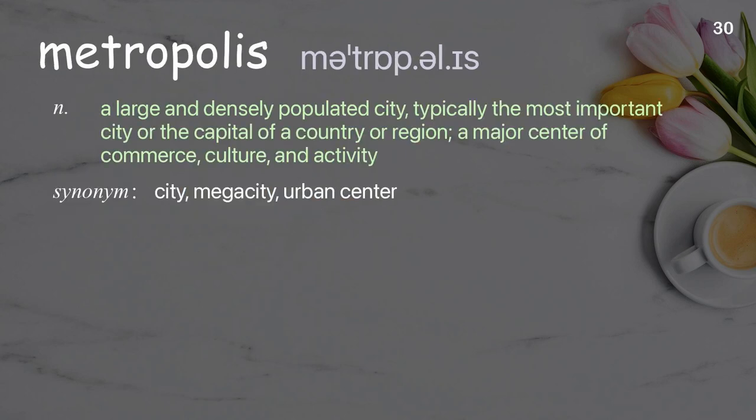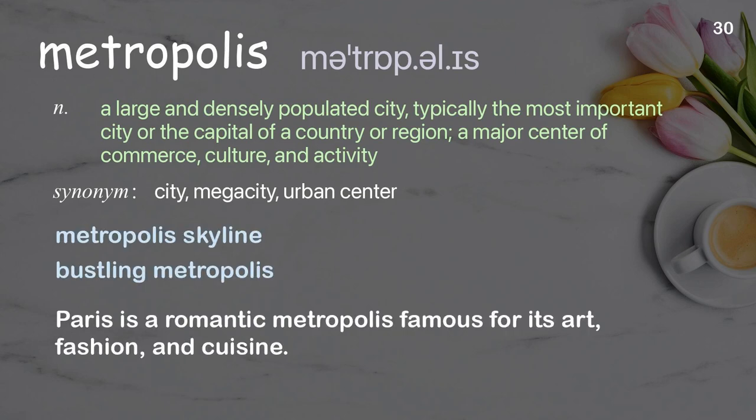Metropolis. A large and densely populated city, typically the most important city or the capital of a country or region; a major center of commerce, culture, and activity. Examples: Metropolis skyline, bustling metropolis. Paris is a romantic metropolis famous for its art, fashion, and cuisine.